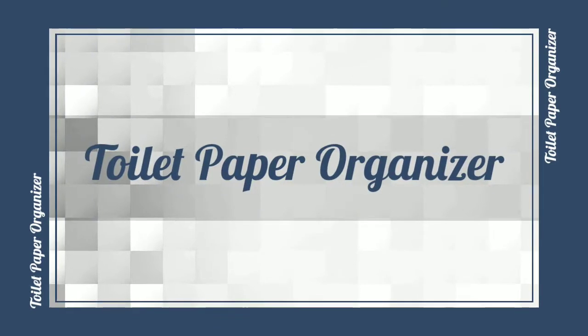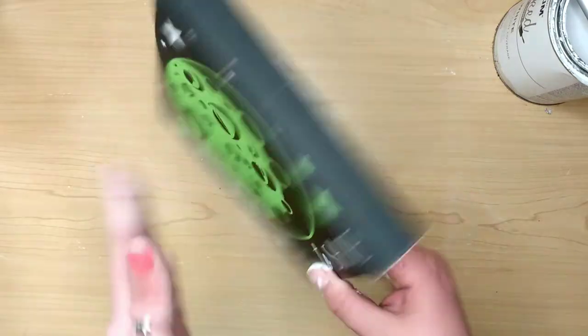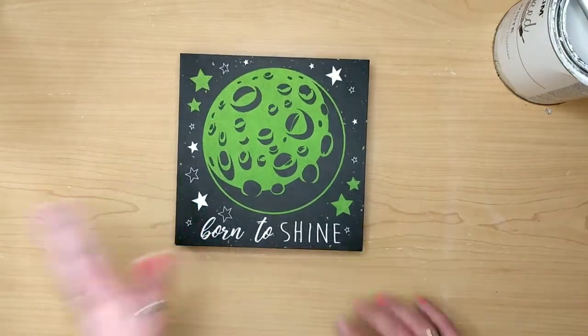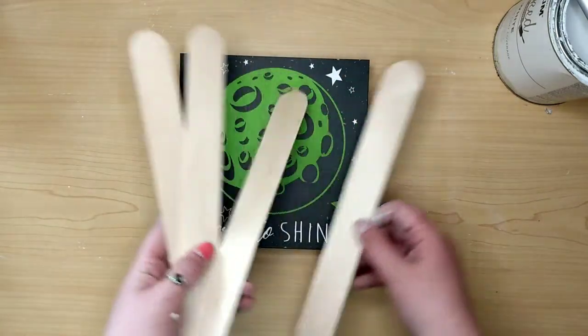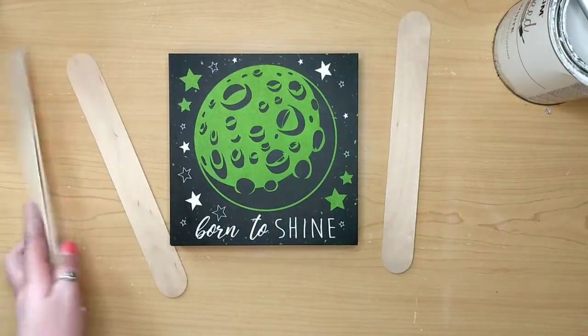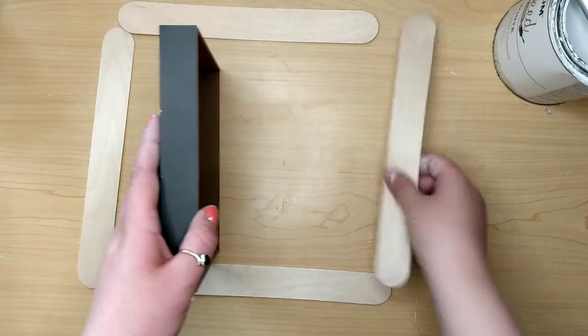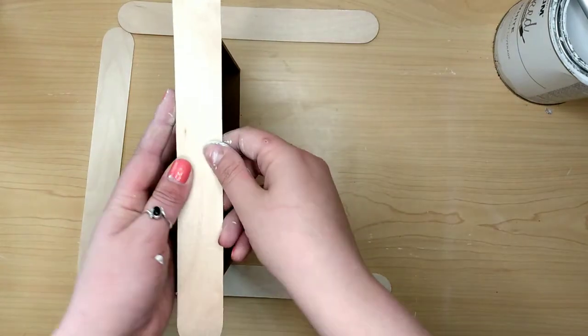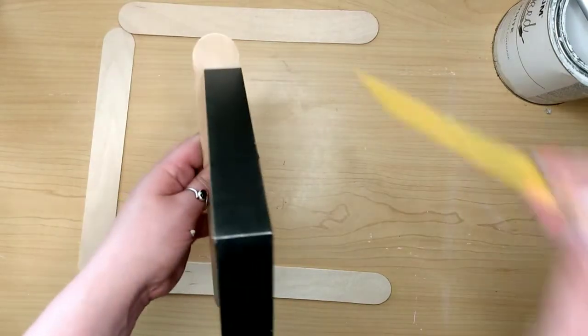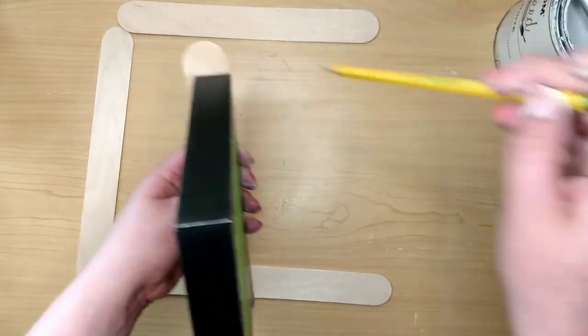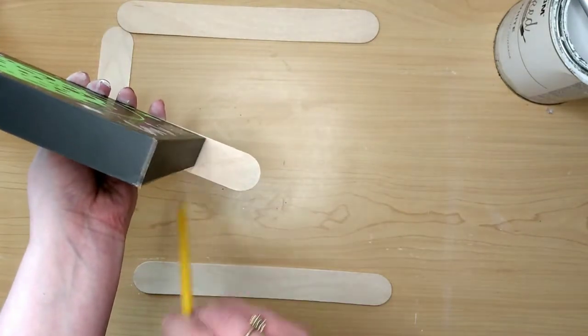Last but not least is our toilet paper holder. And for this I got one of the MDF board box signs from the Dollar Tree. Any will do. I think this one measured like 7 by 7 inches or so. And then you're going to need four of these giant craft sticks from Walmart. Yeah, I know I said this is Dollar Tree DIYs, but it's mostly, okay? I got like two things from Walmart. You could definitely use Dollar Tree sticks if you want, you'll just have to use more of them and cut more. That's it. But I'm just going to cut these down to size so that they fit the edges.